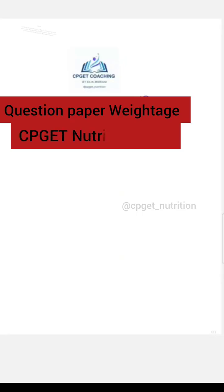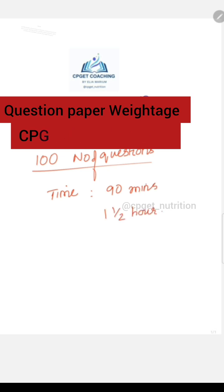This is about the weightage of units in the CPGET Nutrition and Dietetics exam. Firstly, you have a total of 100 questions, and the examination time is 90 minutes, which is one and a half hours.